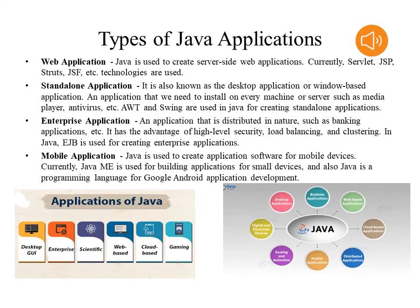Now we will see the applications of Java and Python. The main Java applications are: web development, enterprise applications, mobile applications, and standalone applications. Java is also used for desktop graphical user interfaces — using packages like Swing — as well as scientific applications, web-based applications, cloud-based applications, and gaming. The main Java application categories are web applications, standalone applications, mobile applications, and enterprise applications.